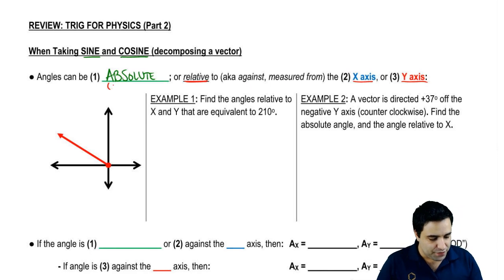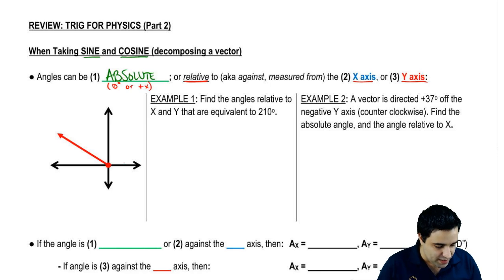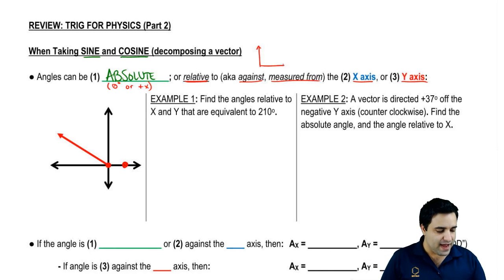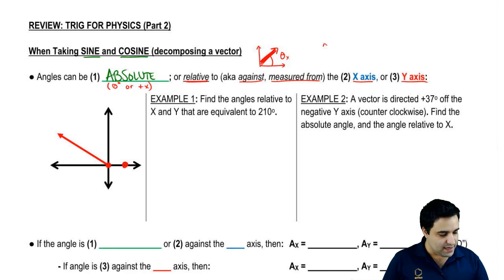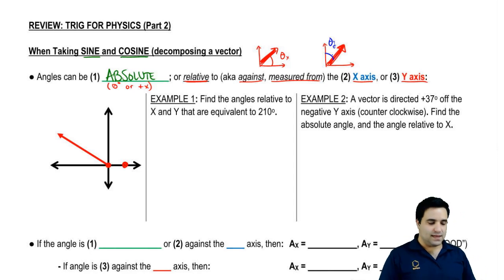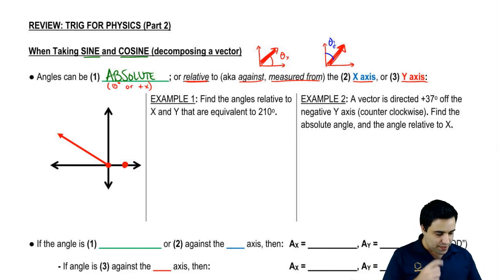Absolute means it's measured from zero degrees, or the positive x-axis right here. Relative can also be referred to as 'against' or 'measured from.' For example, this angle for this vector is against the x-axis — I'll call this theta-x. Or this angle over here is measured from the y-axis. Relative, measured from, against — same thing. Those are the three types, and you should be able to convert from one to the other.